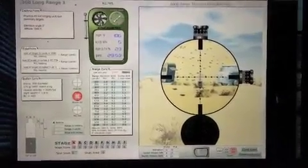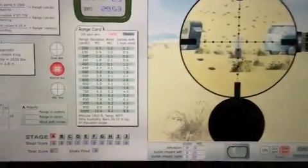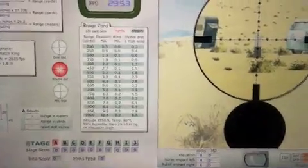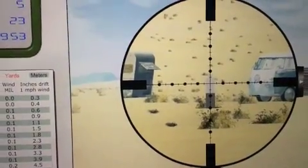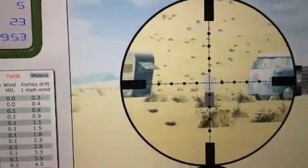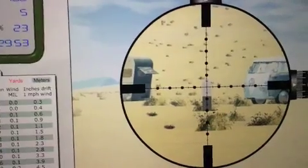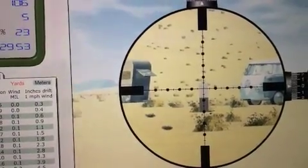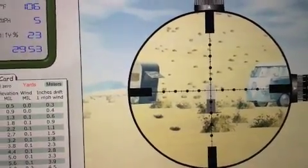Now here's a brief explanation of why they use mil-dot scopes for sniper applications. Based on the weapon and ballistics, knowing that the distance between each one of these dots equals 3.6 minutes of angle. 3.6 minutes of angle is 3.6 inches at 100 yards, 18 inches at 500 yards, or 36 inches at a thousand yards. Knowing all of that, we can use the mil-dot system as a bullet drop compensator.